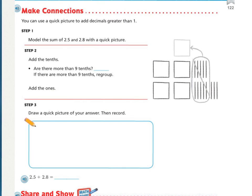So, making connections is us using the quick pictures. So, we can use the quick picture to add the decimals greater than 1. So, we're going to model the sum. Remember, that means adding. Model the sum of 2 and 5 tenths and 2 and 8 tenths with a quick picture. This first one, 2 and 5 tenths, is this group right here. There's 2 ones and then 5 tenths. And then, 2 and 8 tenths. There's 2 ones and 8 tenths. And you can see that it's kind of grouped in a 5 right here.